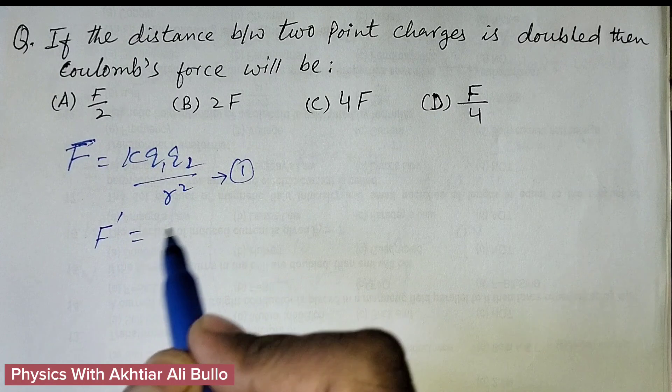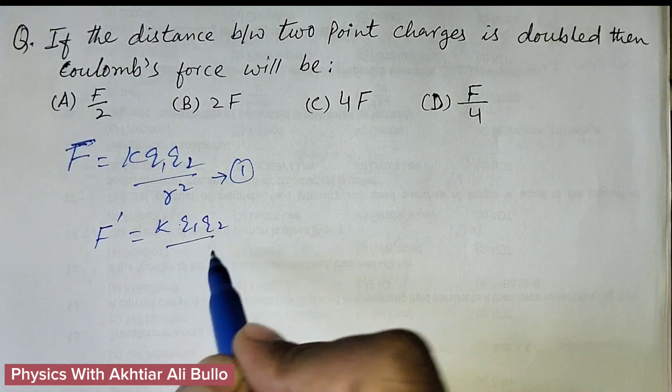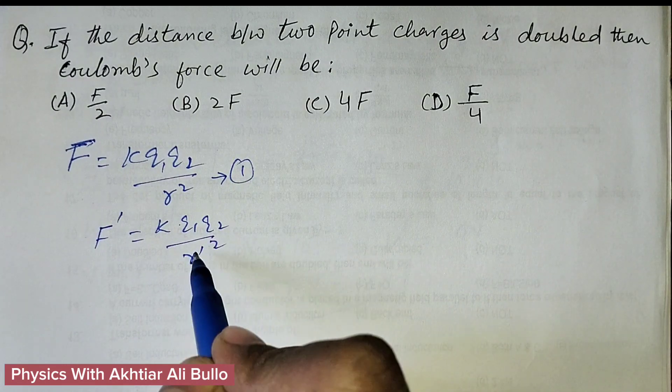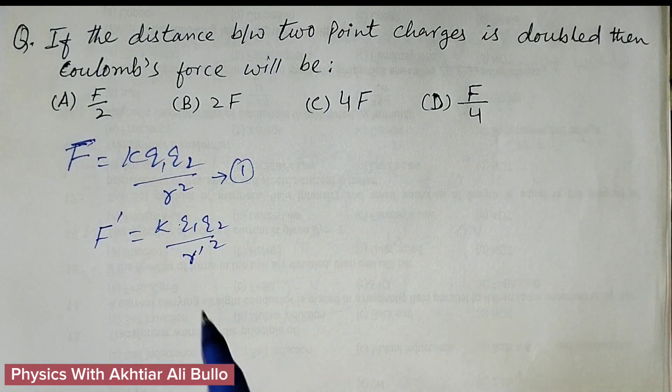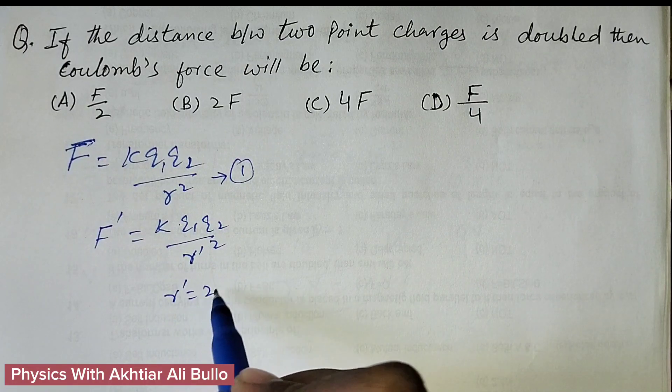So F dash will be equal to K Q1 Q2 over R dash square. As R dash is obtained as 2R.